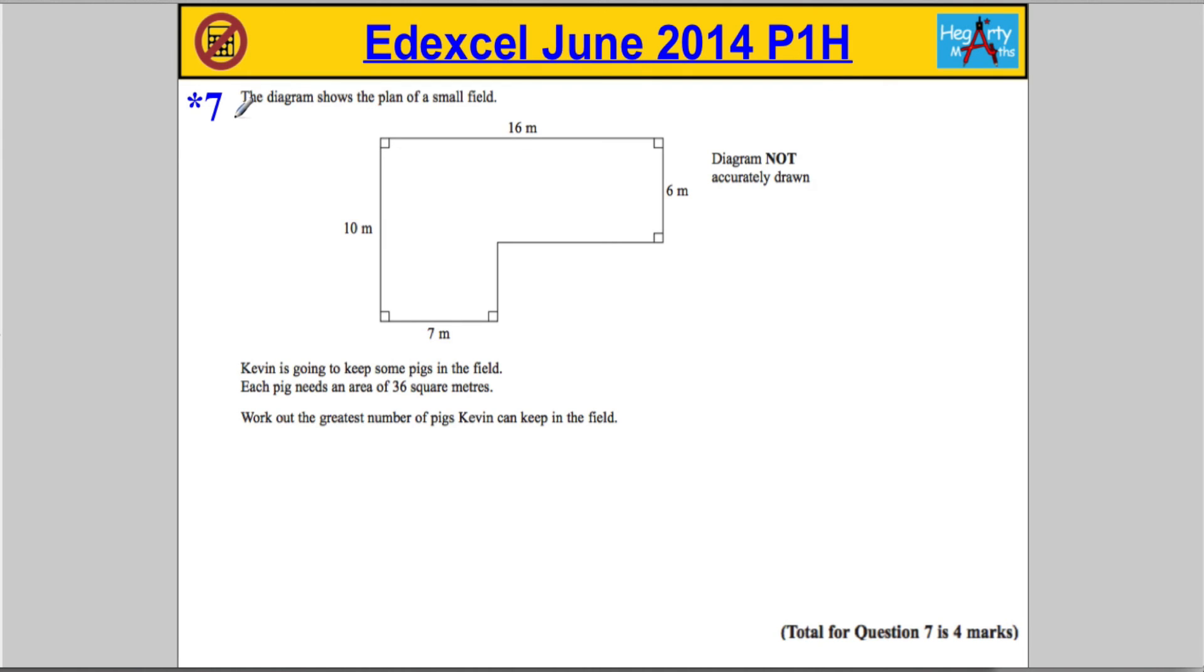Okay, question seven. We're given a diagram that shows the plan of a small field. It's like an L-shaped figure. Kevin is going to keep some pigs in this field, and each pig needs an area of 36 square metres. Let's get the highlighter on here to identify that—he needs 36 square metres.